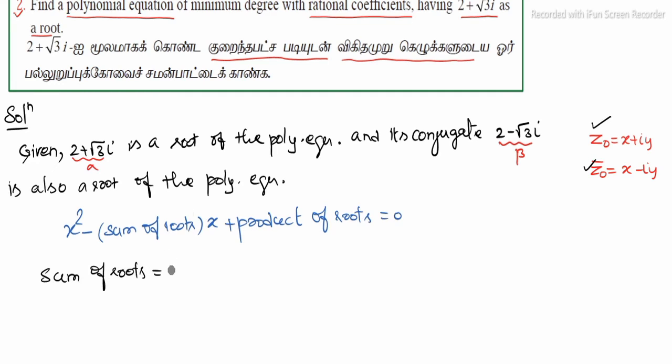So first, sum of roots: alpha plus beta equals 2 plus root 3i plus 2 minus root 3i. Here, plus root 3i minus root 3i will cancel, leaving us with 4.